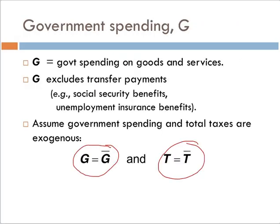We have two types of variables in any model. Endogenous variables — endo meaning within or inside — are variables determined inside the model. Exogenous variables — exo meaning outside — are determined outside the model. So endogenous variables are inside the model, exogenous variables are outside the model.